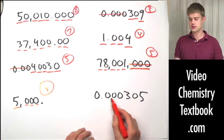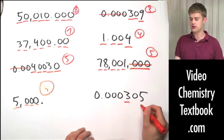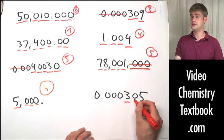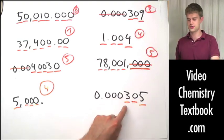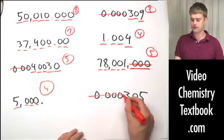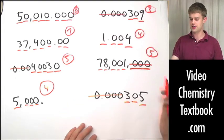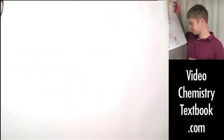0.000305. The non-zero digits are significant, and the zero sandwiched between them is also significant. Zeros to the left are never significant, so there are only three significant figures here.